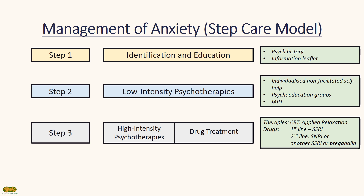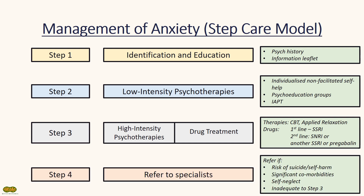The first-line drug treatment recommended is an SSRI — selective serotonin reuptake inhibitor — with examples including citalopram or fluoxetine. Second line recommended is another SSRI or an SNRI — selective serotonin and noradrenaline reuptake inhibitor — such as duloxetine. An alternative is pregabalin as well. The final step is to refer to secondary care, which should also be considered if there is a risk of suicide, self-harm or self-neglect.